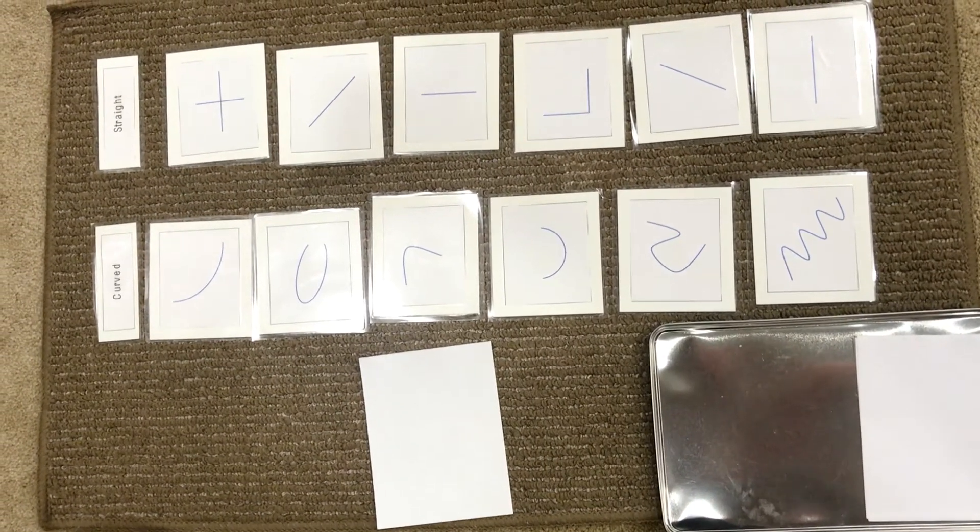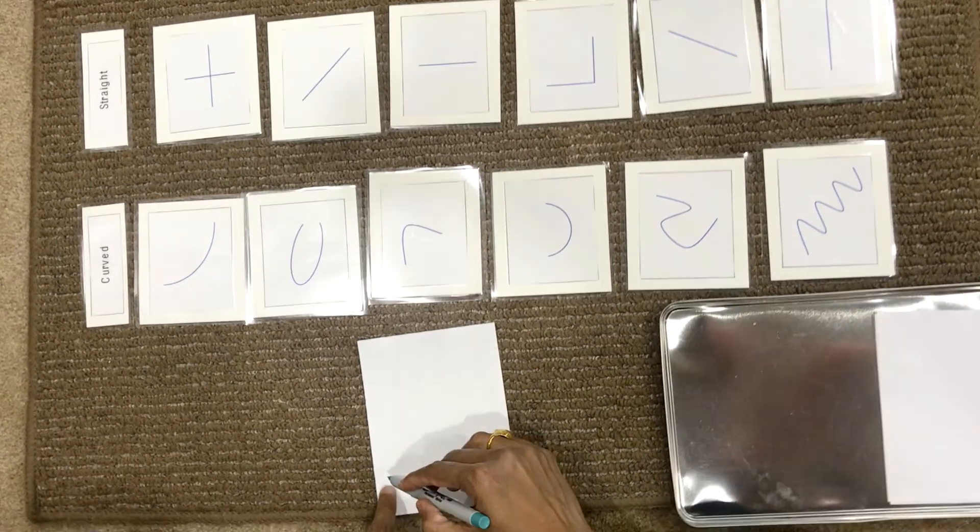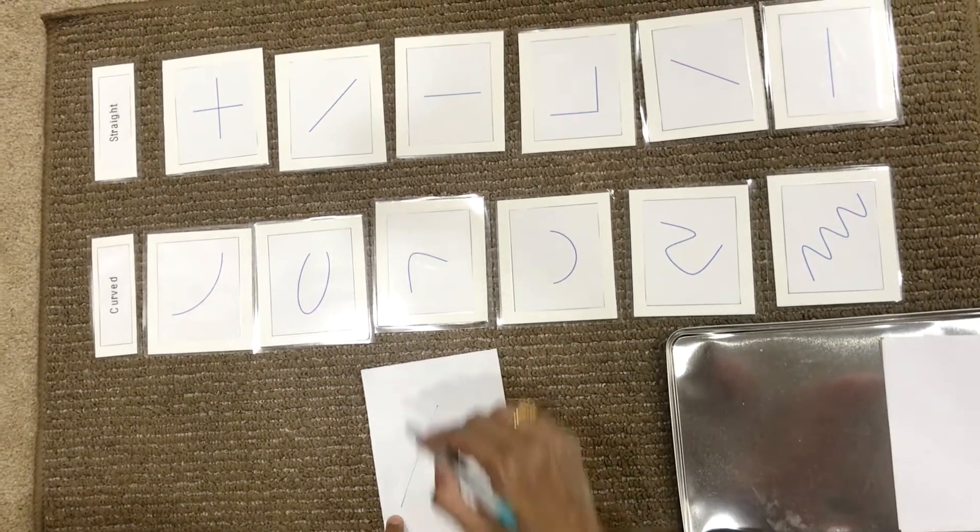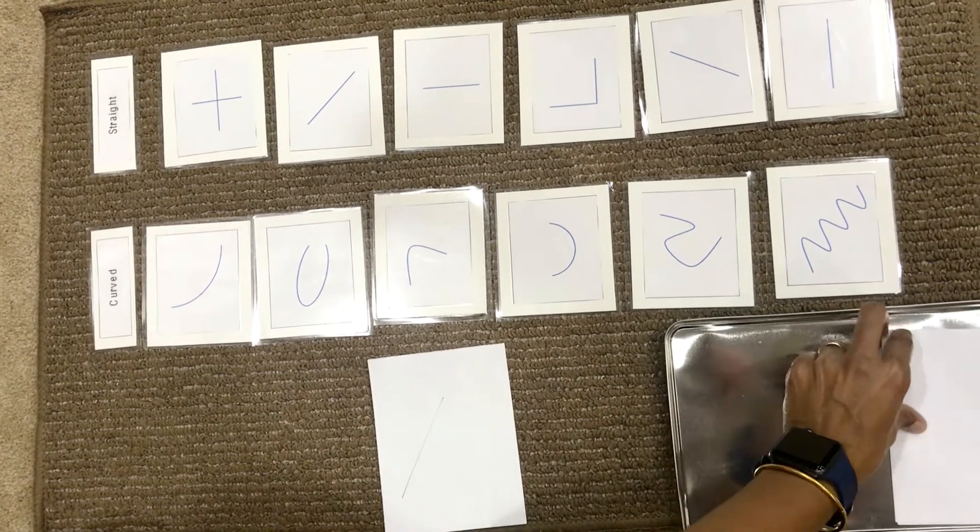A straight line will not have any bulging edges. This is a straight line. Now let's draw a curved line.